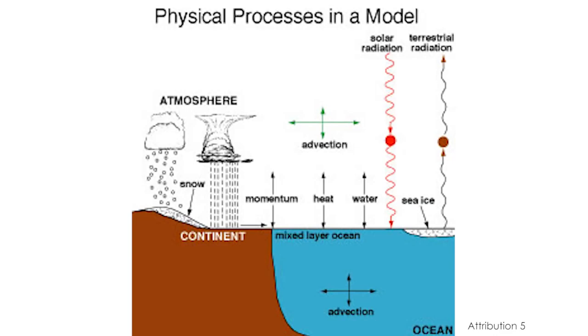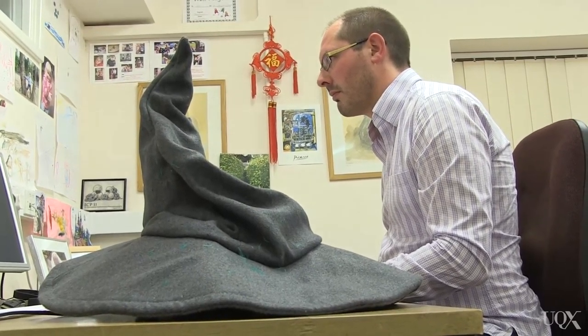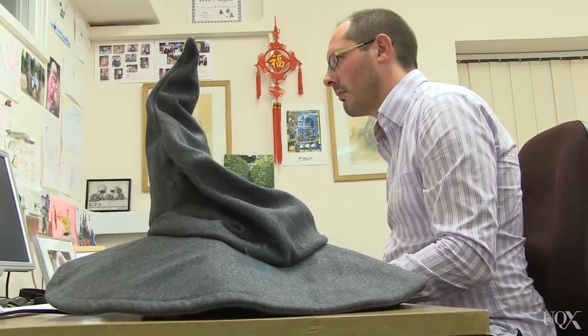So a good question is: what actually is a climate model? A climate model is a piece of computer code — a list of instructions to a computer that encapsulate our very best understanding of the way that the atmosphere of our planet and the ocean work in a physical sense.